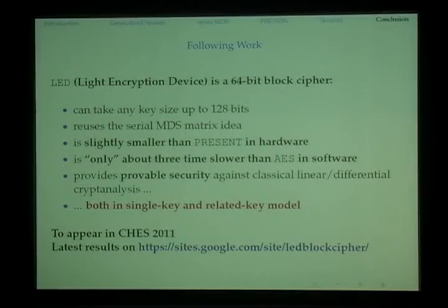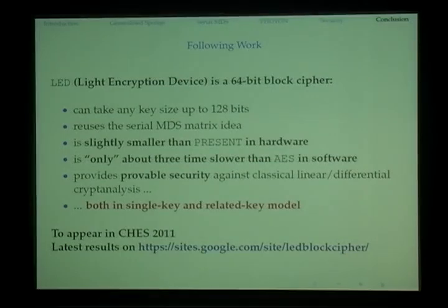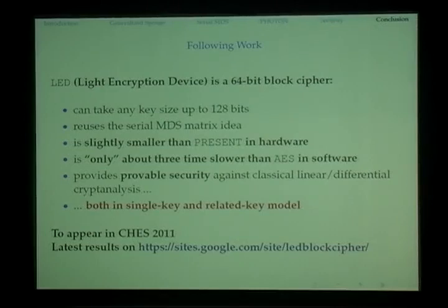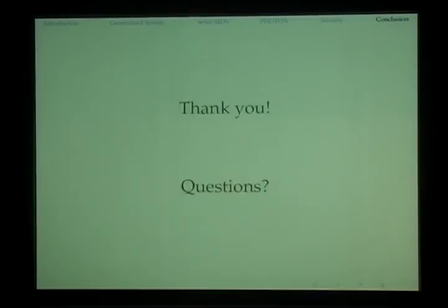For future work, we proposed a 64-bit block cipher called LED — Light Encryption Device. It can take any key size up to 128 bits. It reuses the serial MDS matrix idea, is slightly smaller than PRESENT in hardware, only about three times slower than AES in software, and provides provable security against classical linear and differential cryptanalysis in both single-key and related-key models. This paper was accepted by CHES this year, and we also have a website for the latest results. Thank you for your attention.